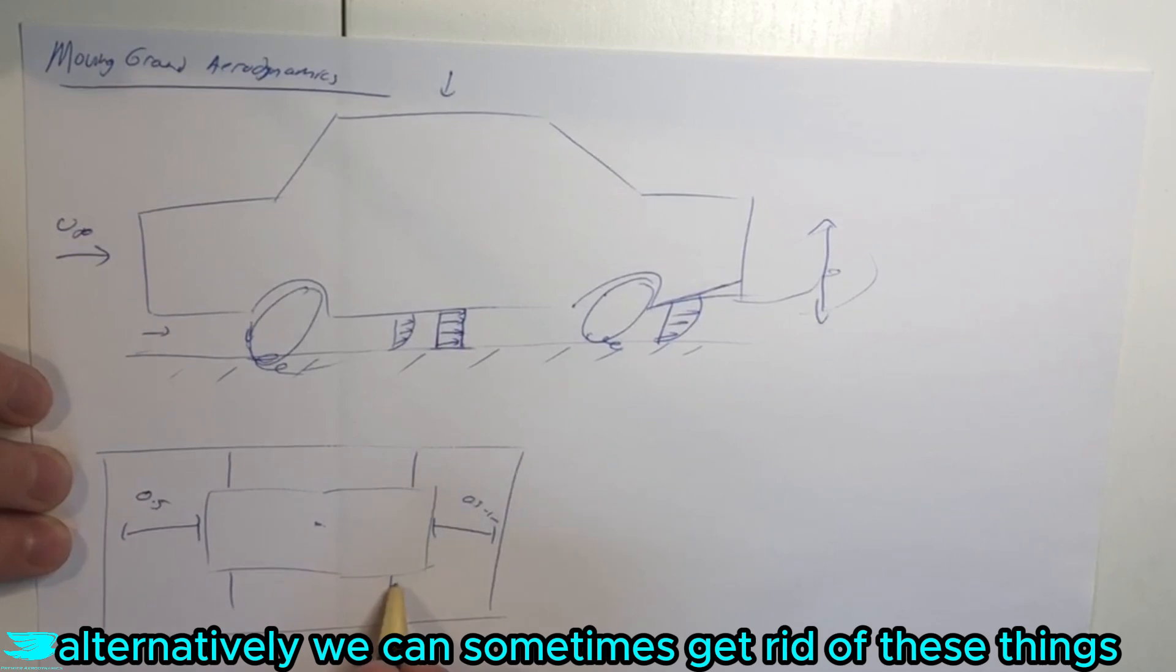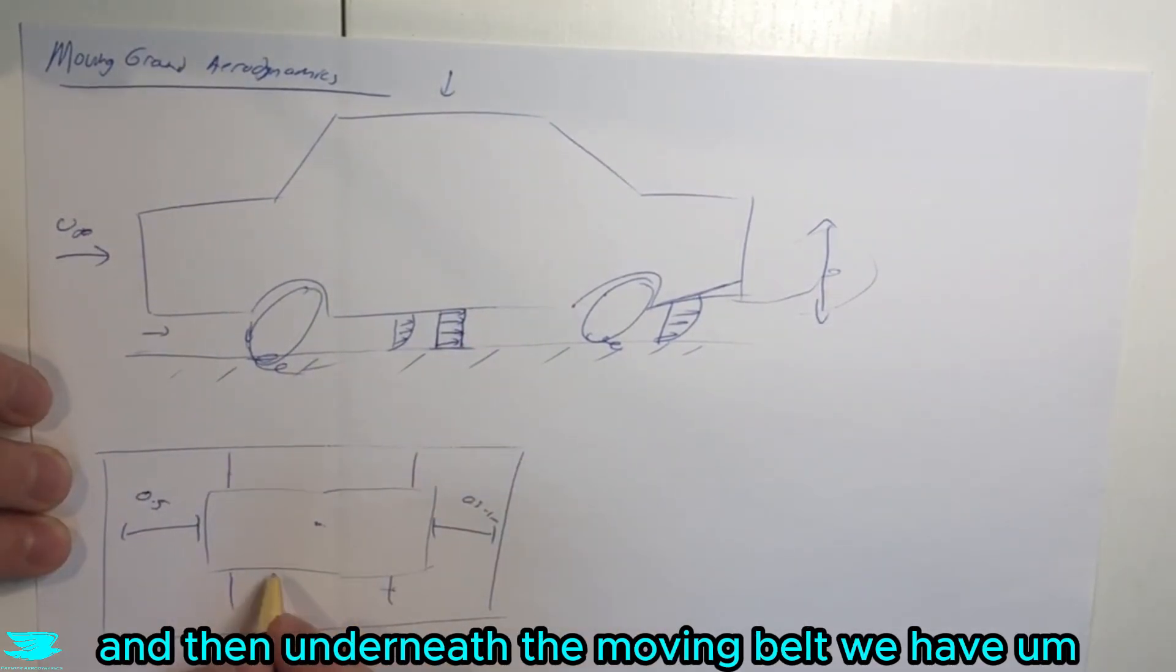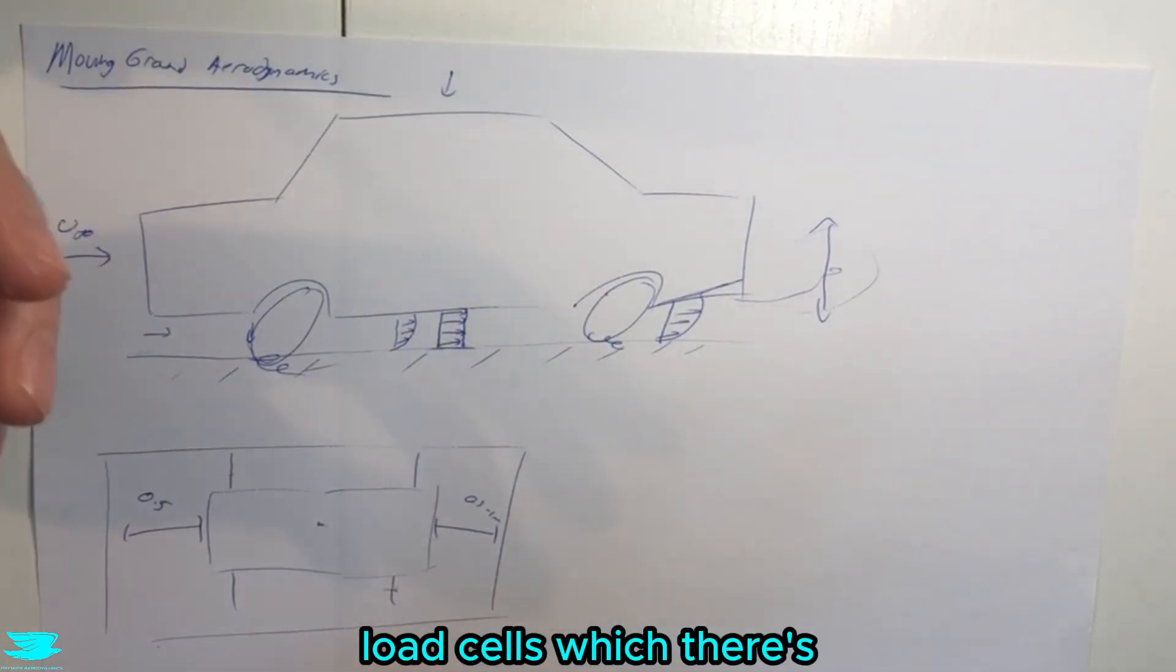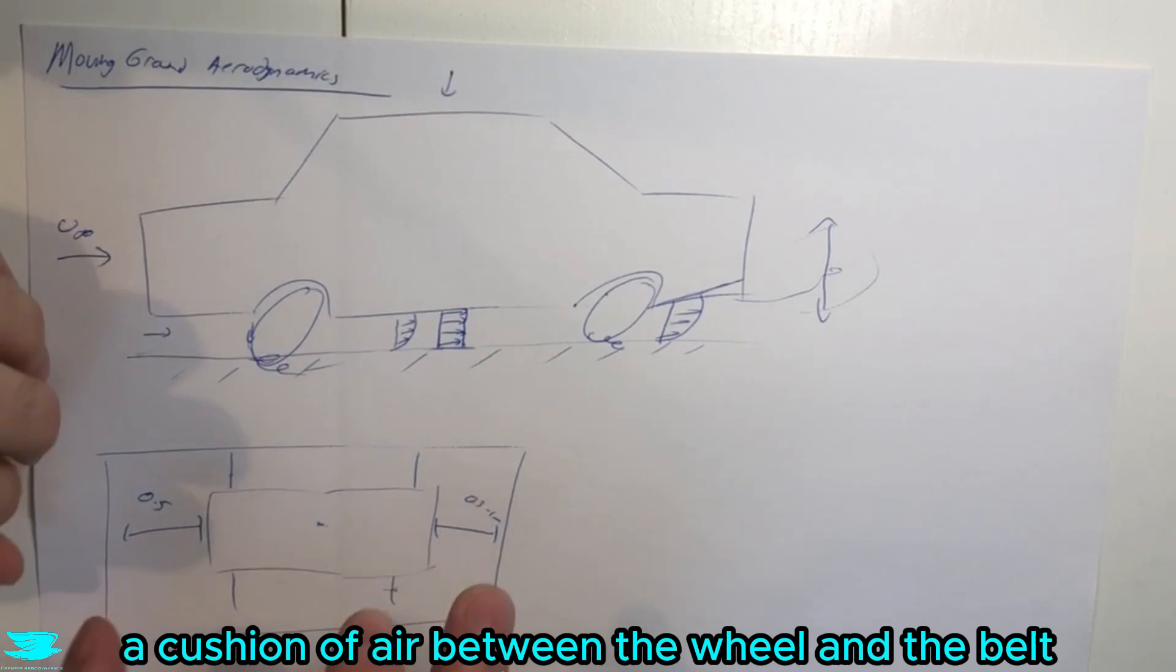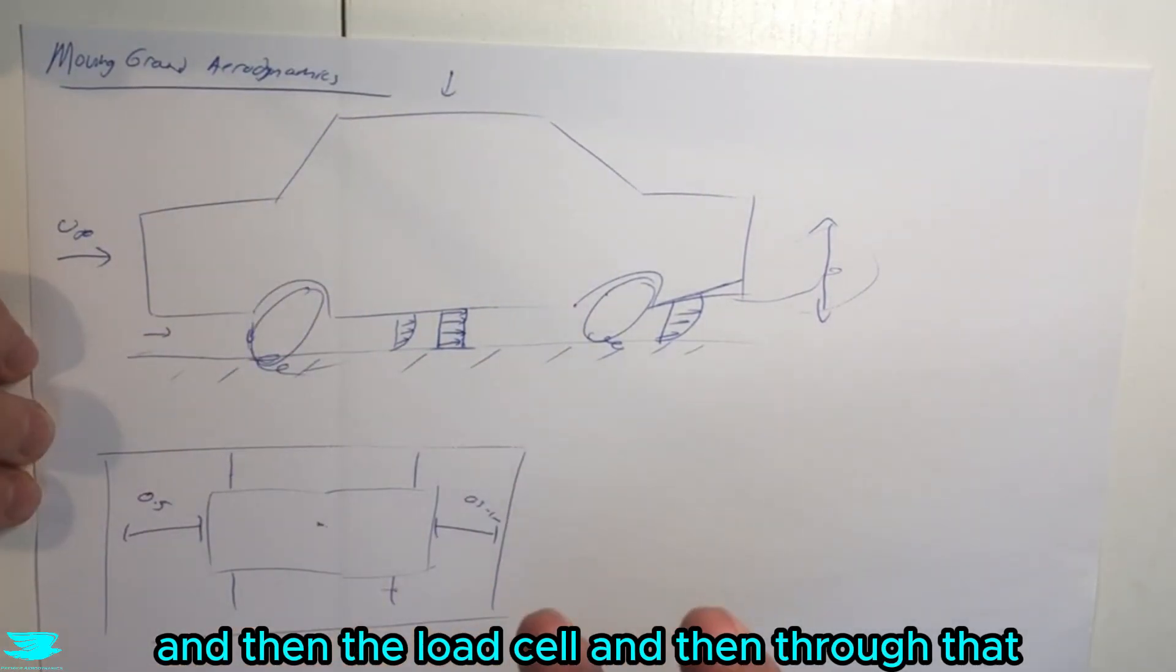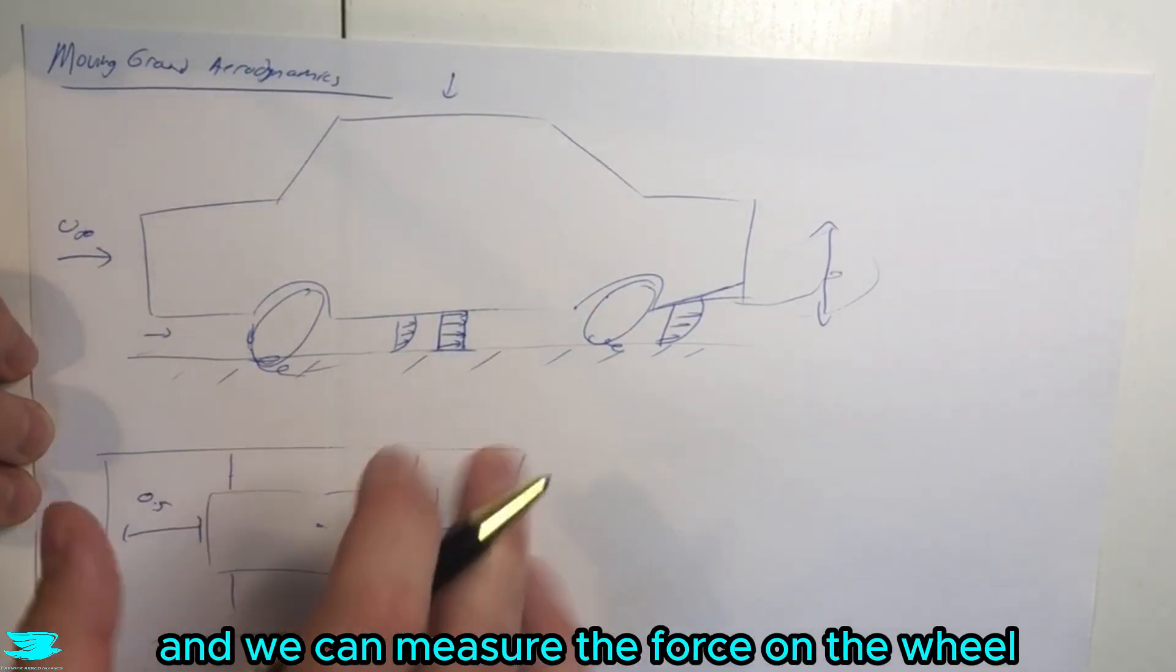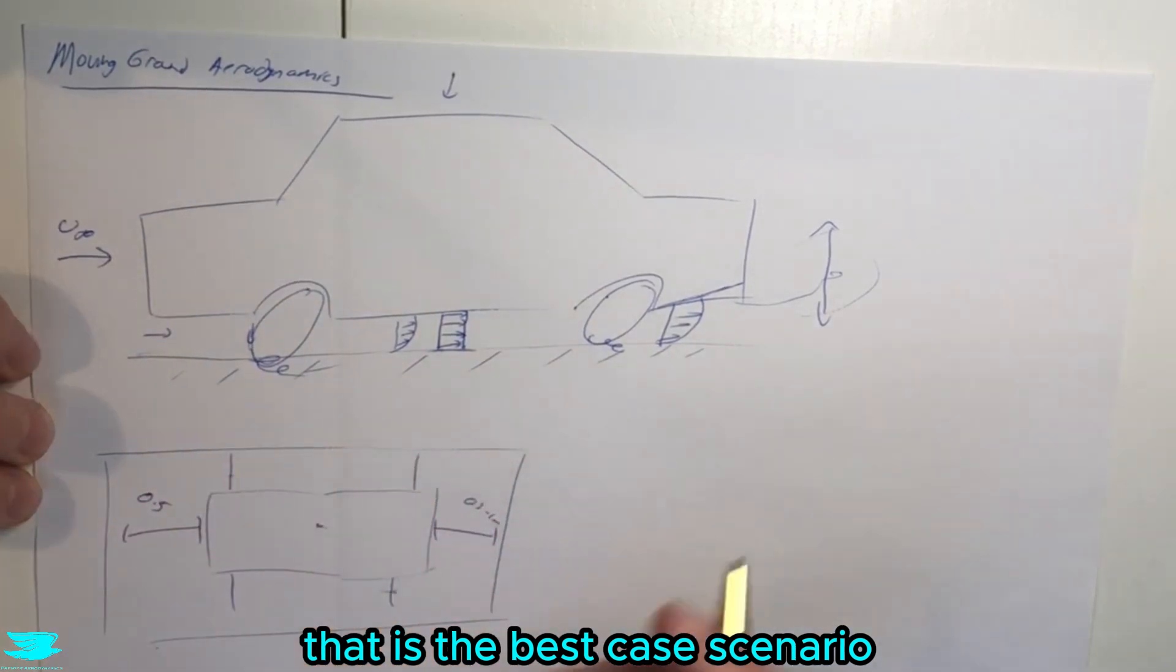Alternatively, we can sometimes get rid of these stings and have the entire car just sitting on here. Then underneath the moving belt, we have load cells, which is a cushion of air between the wheel, the belt, and the load cell. Through that cushion of air, we get that force being transmitted for each wheel and we can measure the forces on the wheel.